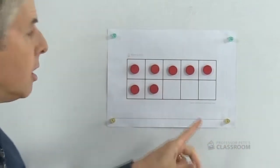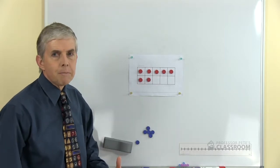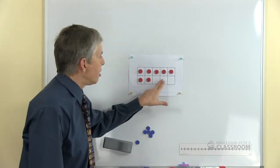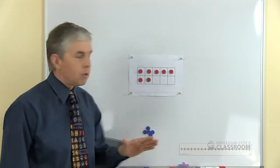But they can also subitize the remaining spaces. In other words, without counting the counters, they can look at them and see there's seven red ones and three empty spaces, so seven plus three equals ten.